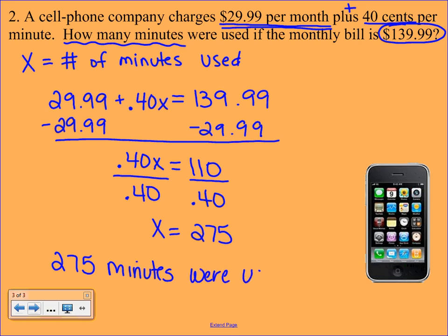And you can easily check your answer by just plugging the 275 back into the equation. So you can multiply it by the 40 cents and add the $29.99, and that should give you your total of $139.99. This concludes your lesson on problem solving with two-step equations, and you can now go on to your worksheet.